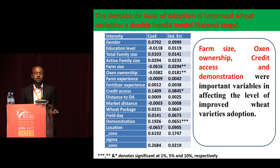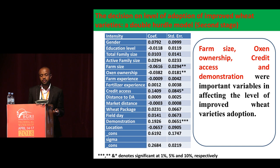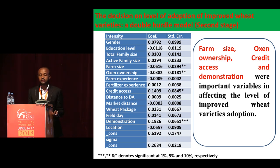After deciding to adopt, the next decision is how much area or resources to allocate. Based on that, this study found around four variables to be significant: farm size, oxen ownership, credit access, and participation in extension. These were found to be important variables affecting the level of improved wheat variety adoption.